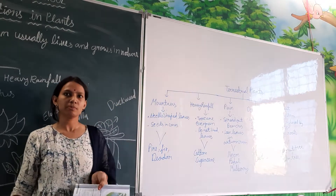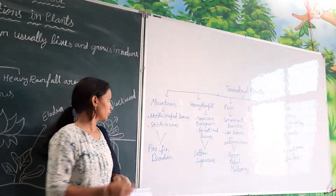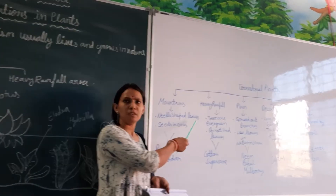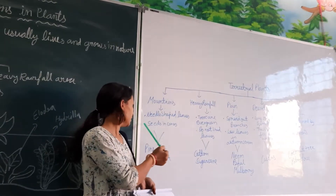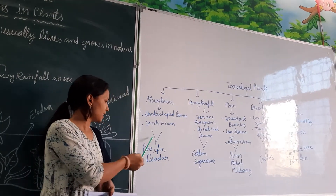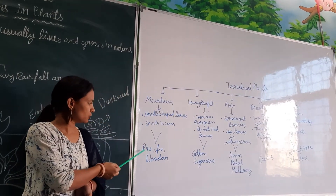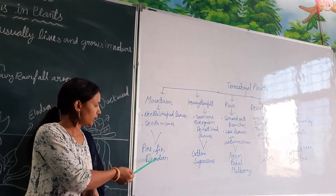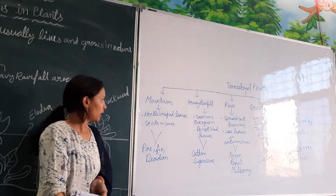Plants on mountains — what types of plants are found on mountains? They are needle-shaped with seeds and cones. Examples are pine, fir, and deodar.